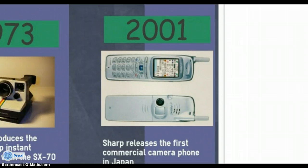Just twenty short years later, Sharp releases the first commercial camera phone in Japan. Can you believe that camera phones have only been around for ten years? It kind of blows your mind, doesn't it? They're such a major part of our society now, but in reality, out of the two hundred years that cameras have been around, they've only been this mobile for ten.